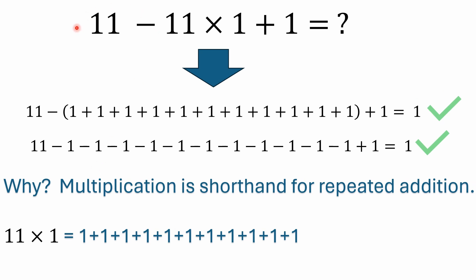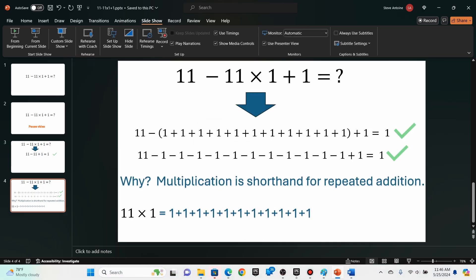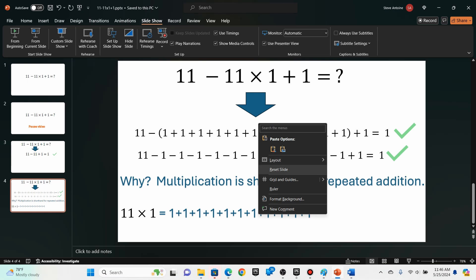You can add parentheses that would change the problem — if I did something like placing parentheses around 11 minus 11 first, then you'd take 11 minus 11 to get zero and then have zero times 1 plus 1, and you would still get one that way. But that's not what we're doing here.